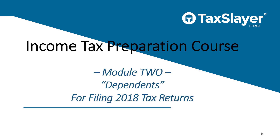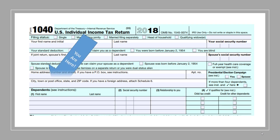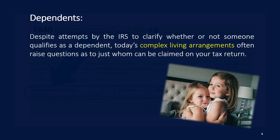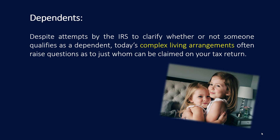Welcome to module 2 of the TaxSlayer Pro basic income tax preparation course for filing 2018 tax returns. In this module we'll cover dependents, and right now we're here on the 1040 for 2018 in the dependents section. Despite attempts by the IRS to clarify whether or not someone qualifies as a dependent, today's complex living arrangements often raise questions as to just whom can be claimed on your tax return.